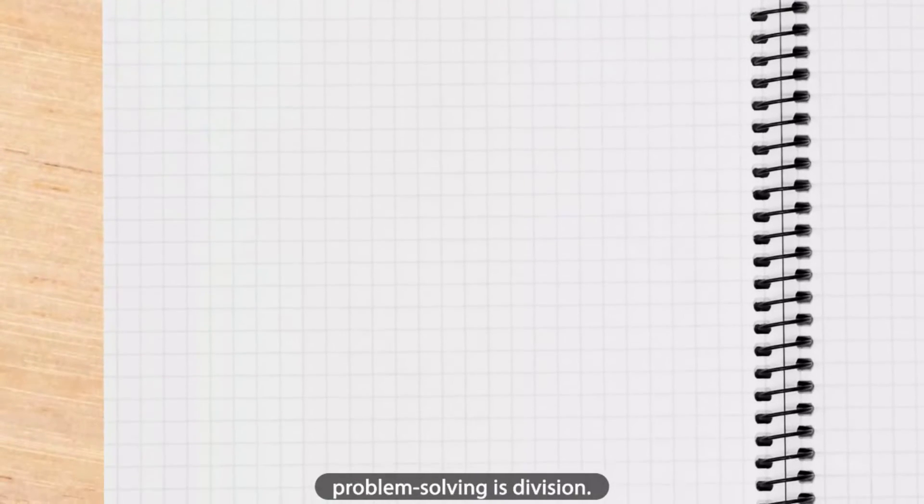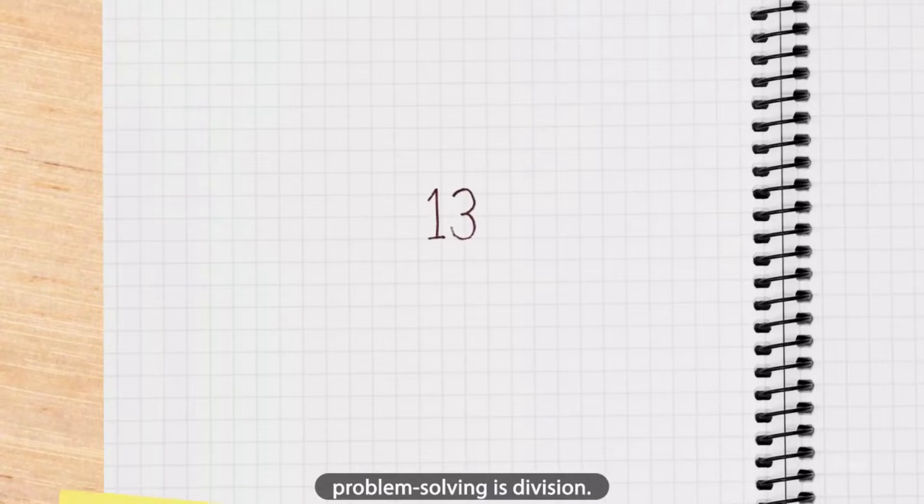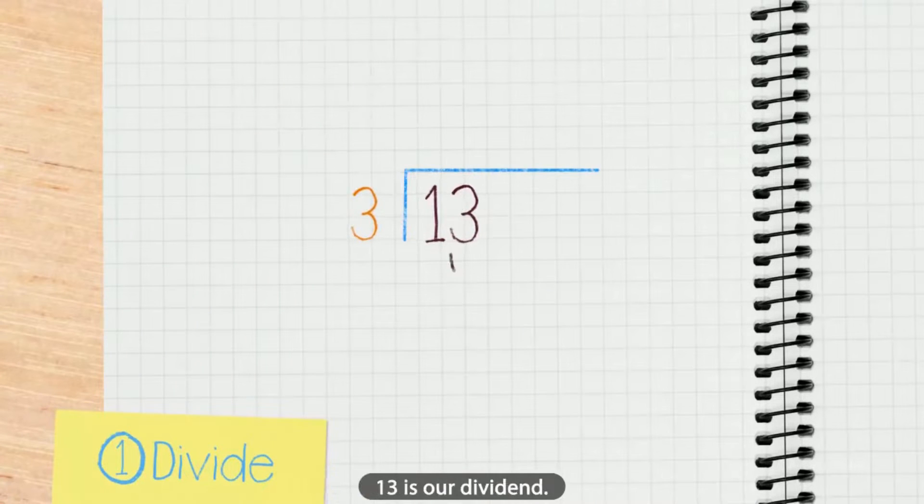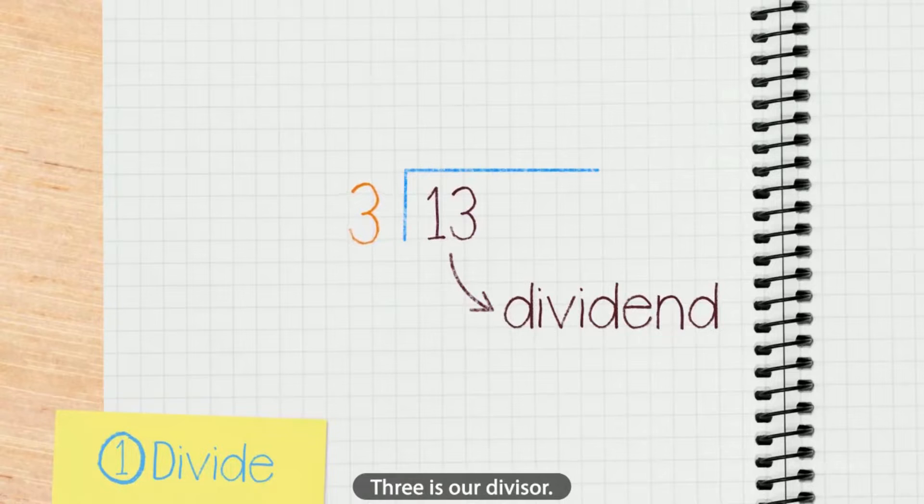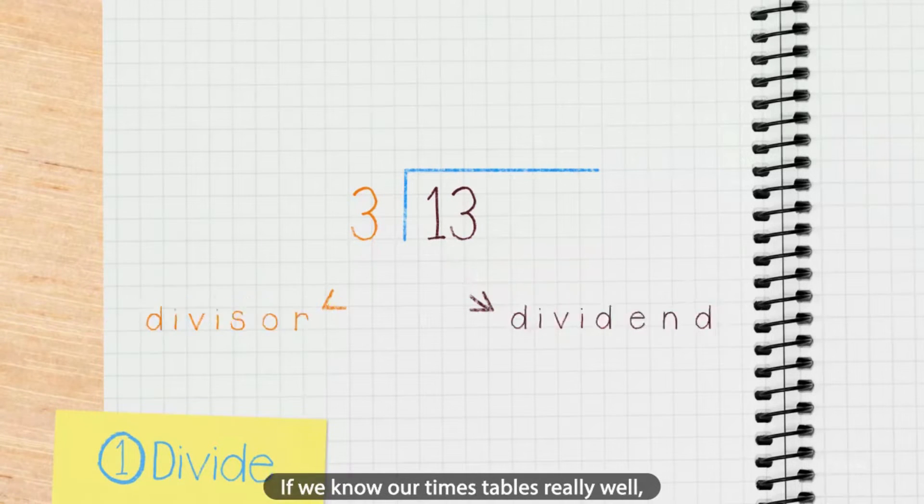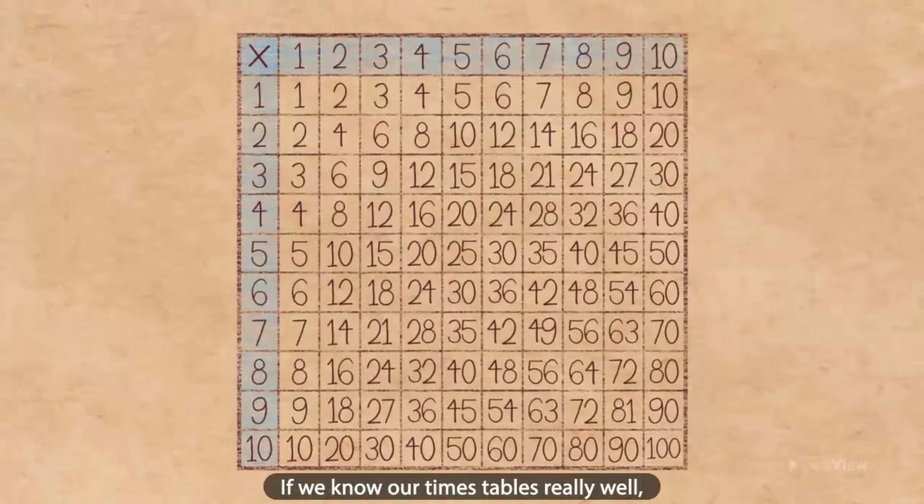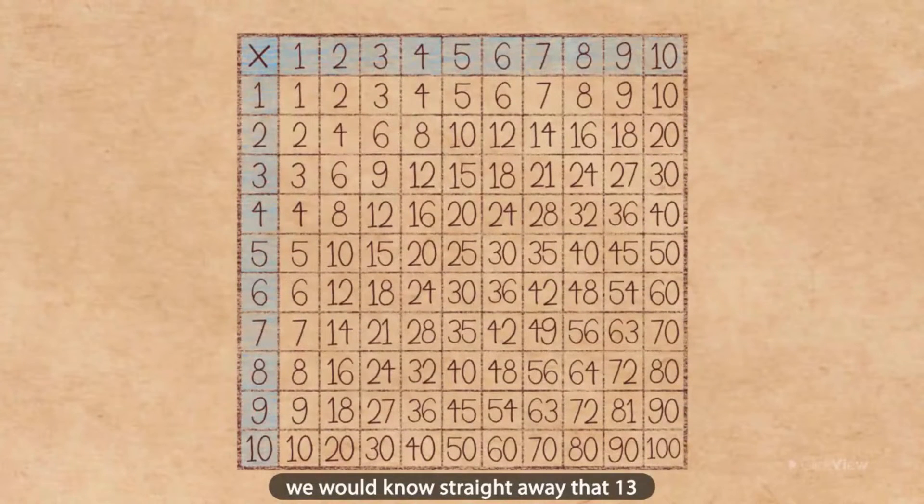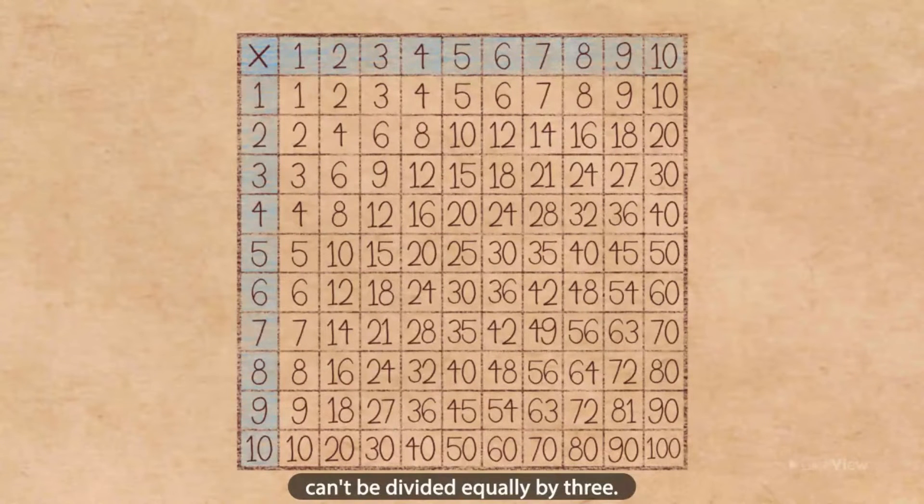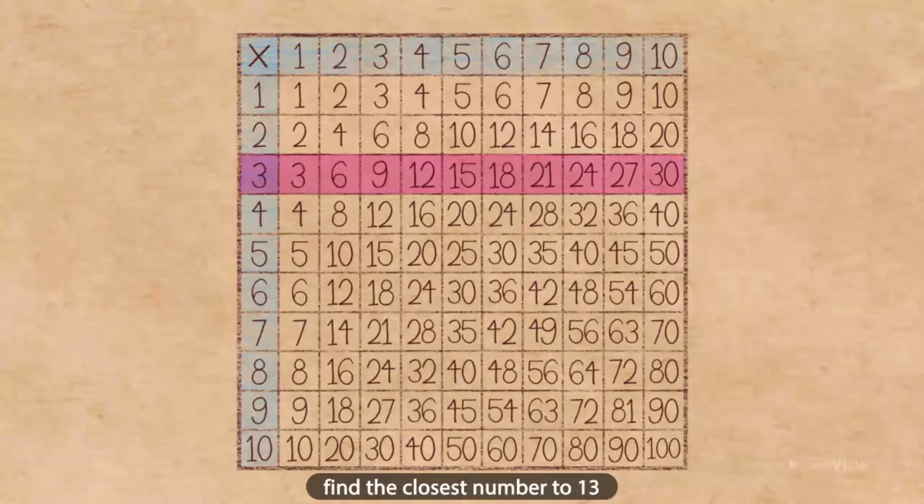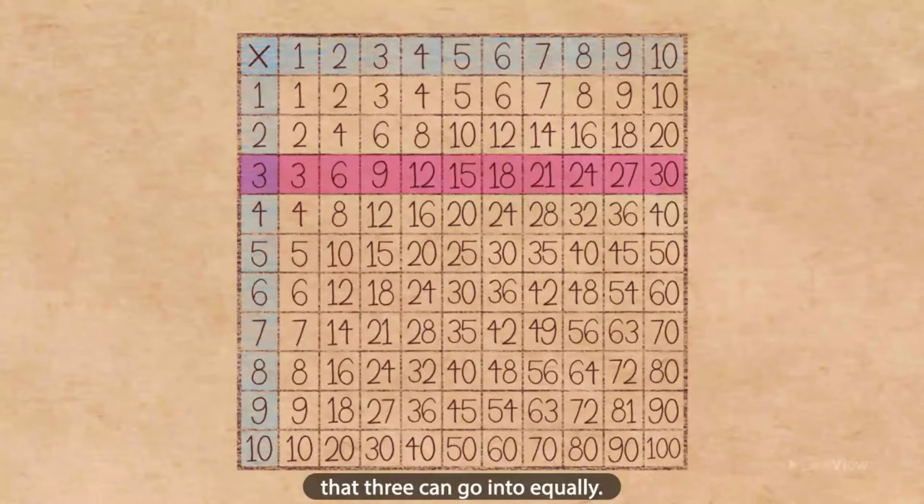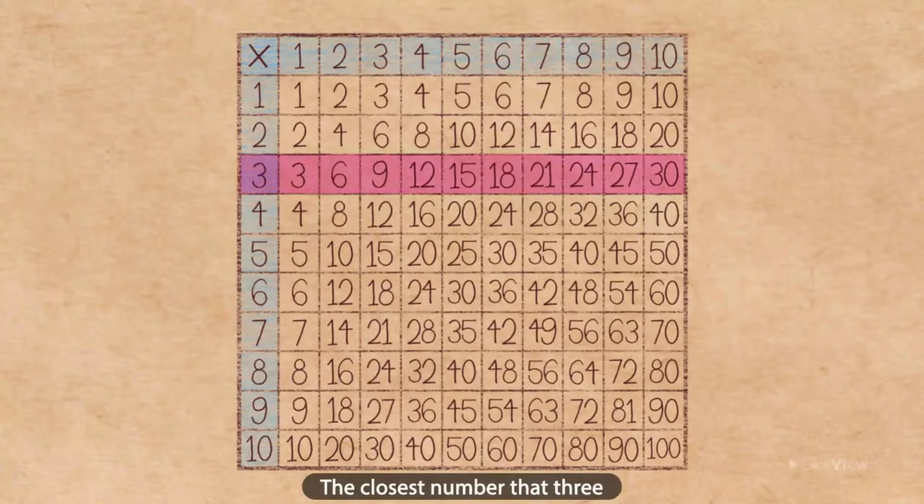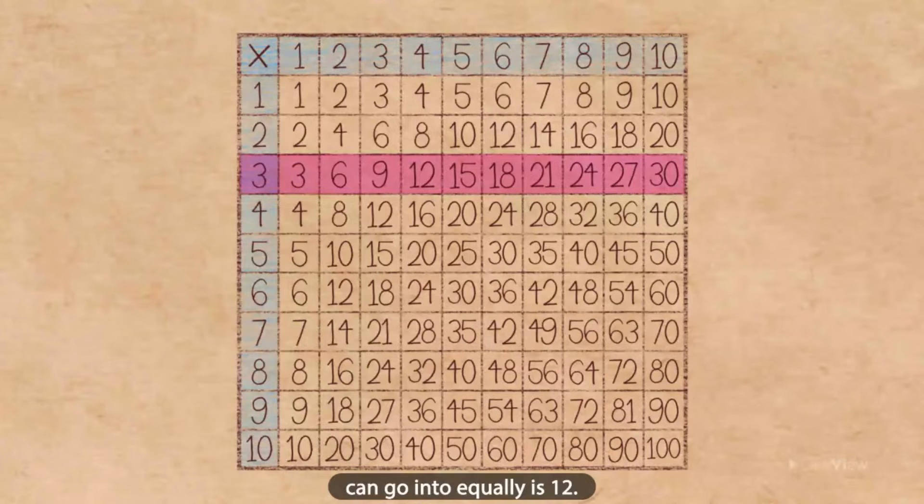The first step in our problem solving is division. Thirteen is our dividend. Three is our divisor. If we know our times tables really well, we would know straight away that 13 can't be divided equally by three. So what we need to do is find the closest number to 13 that 3 can go into equally. The closest number that 3 can go into equally is 12.